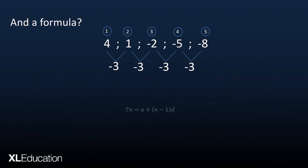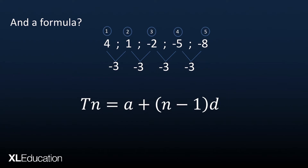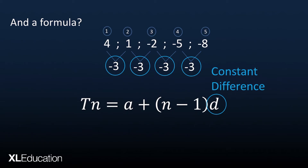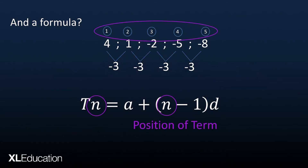This gives us tn equals a plus (n minus one) times d — the formula for any arithmetic sequence. Here, a is equal to the first term, d is the constant difference being added, and n is the position of the term we're looking for.